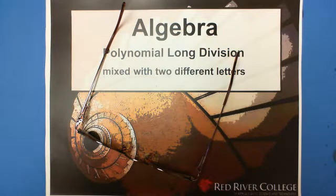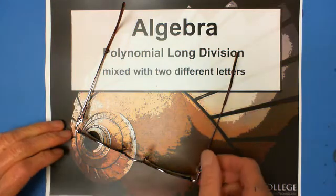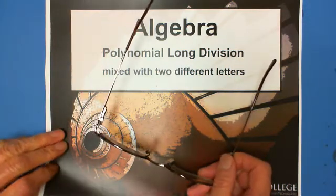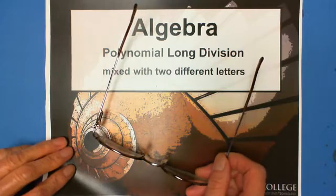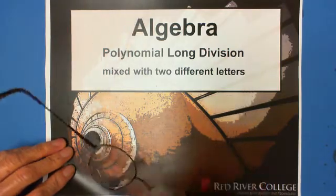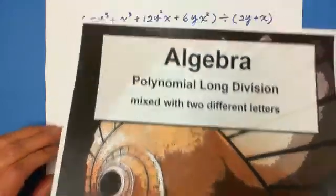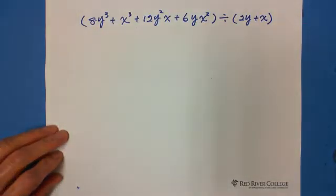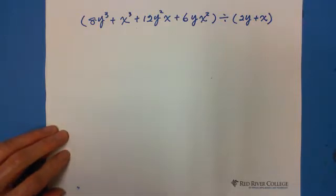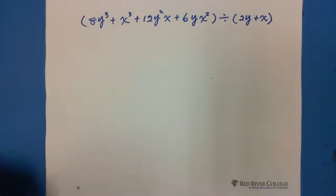Hi, welcome to Wiseguides. Polynomial long division mixed with two different letters. When a polynomial has two different letters, for example x and y, here's how to do this kind of question. Here is the example: 8y cubed plus x cubed plus 12y squared x plus 6y times x squared, divided by 2y plus x. Mixed with two letters, x and y.